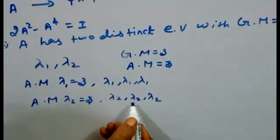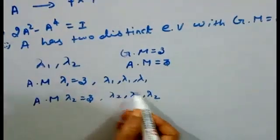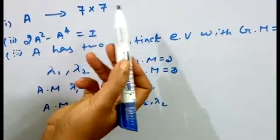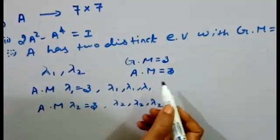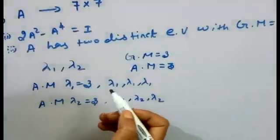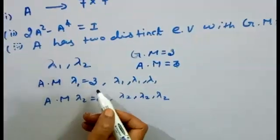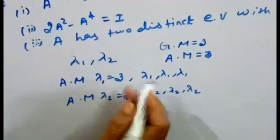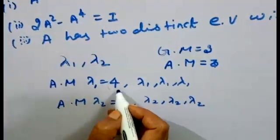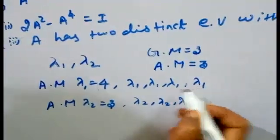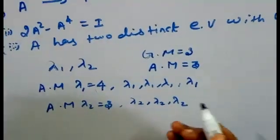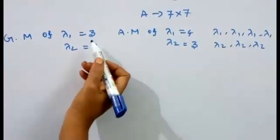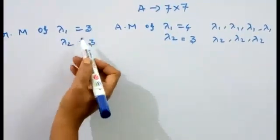Now, the total number of eigenvalues in the given condition: if we assume algebraic multiplicity 3 for each eigenvalue, we get 6 eigenvalues. Since the matrix is 7×7, we need 7 eigenvalues total. So we assume algebraic multiplicity of λ1 is 4 and algebraic multiplicity of λ2 is 3. The geometric multiplicity of λ1 is 3 and the geometric multiplicity of λ2 is equal to 3.